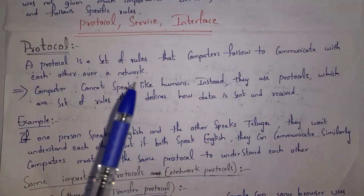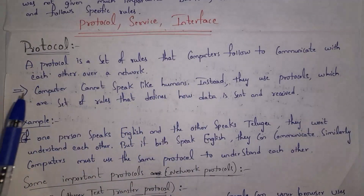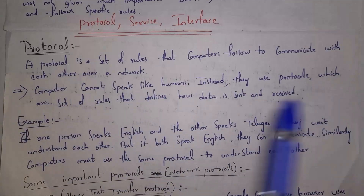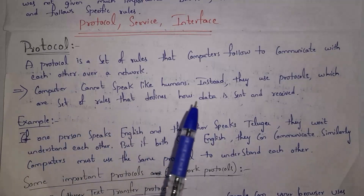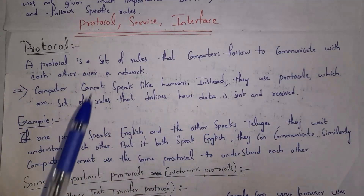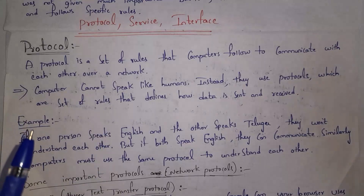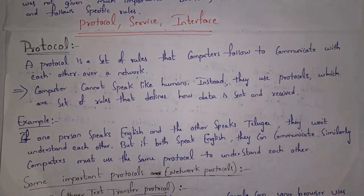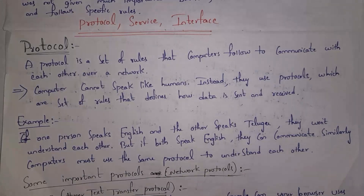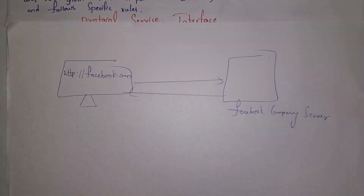A protocol is a set of rules that computers follow to communicate with each other over a network. Computers can't speak like humans; instead they use protocols, which are a set of rules that define how data is sent and received. For example, if one person speaks English and another speaks Telugu, they cannot communicate because they use different languages. Similarly, if two computers want to communicate in a network, they need to follow the same protocols.